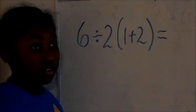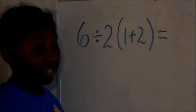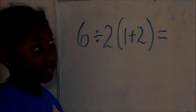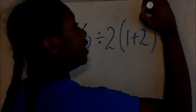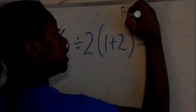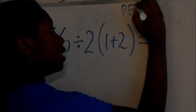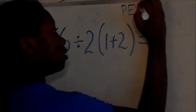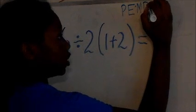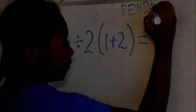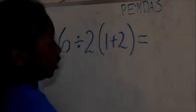Okay, tell us a little bit about that. How does that work? In order of operations, the method is PEMDAS. It's P for parentheses, E for exponents, M for multiplication, D for division, A for addition, and S for subtraction.